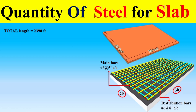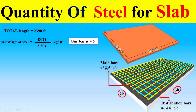Now dear students, I can find the quantity very easily because the total length is 2390 feet. We also know that the unit weight of steel is equal to d² divided by 24, divided by 2.204. This gives the unit weight of steel. Since we are using a Number 6 bar in this slab, we substitute d = 6 into the formula to get the unit weight of the Number 6 bar.